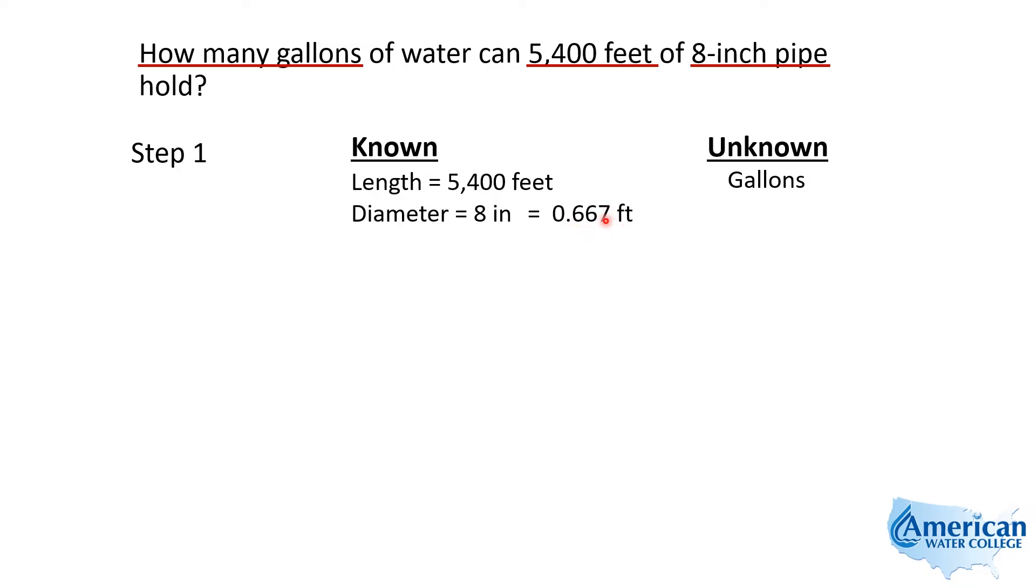If I just kept going a bunch of 6s, I'd get a slightly different answer at the end. But I just went out three decimal places and called it 0.667. So this is the number I'm going to use for my pipe diameter.